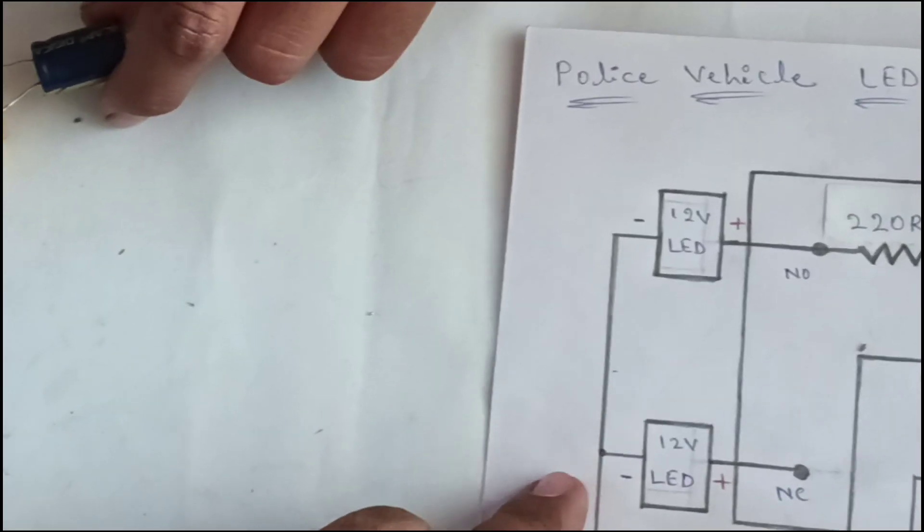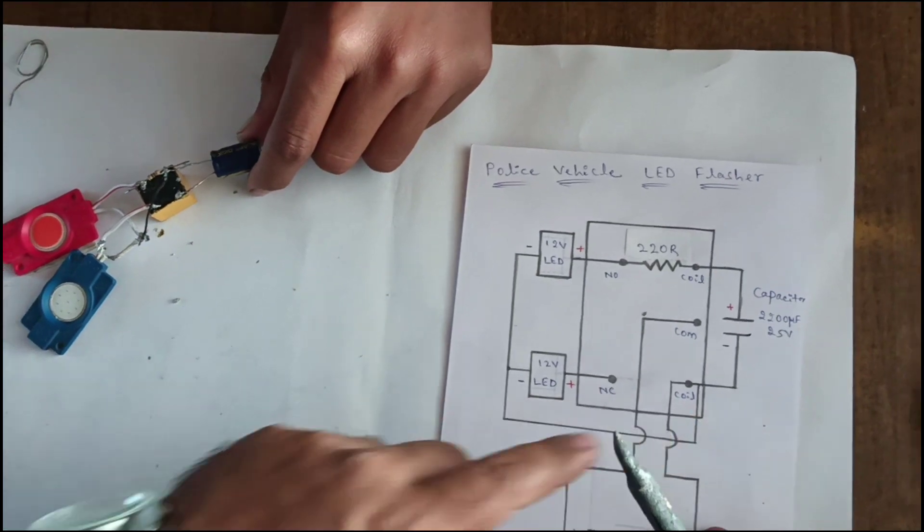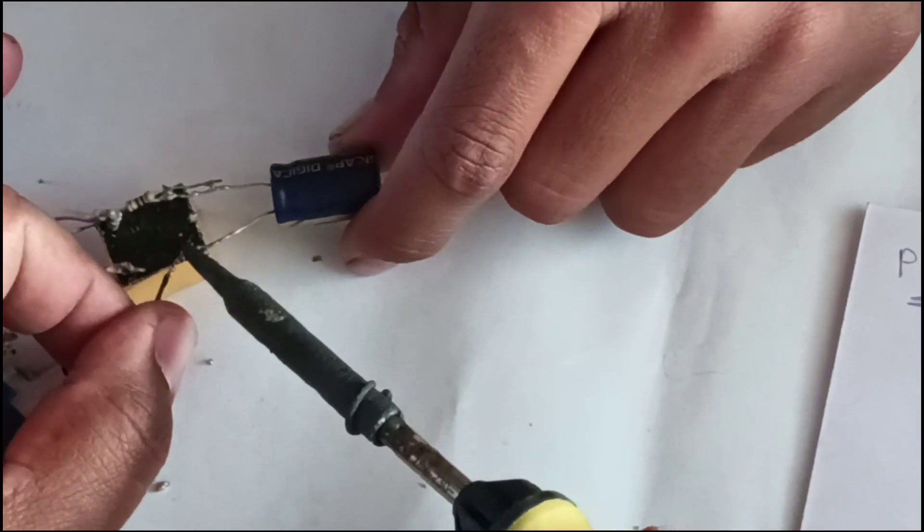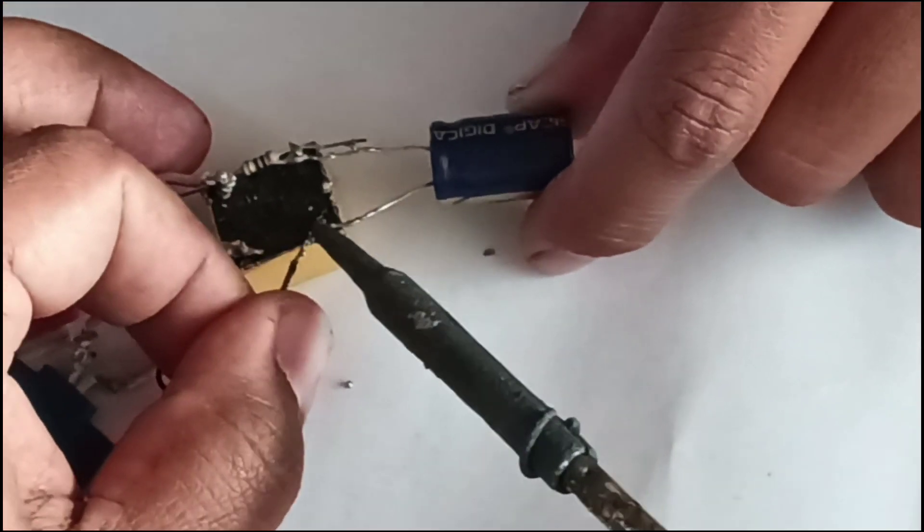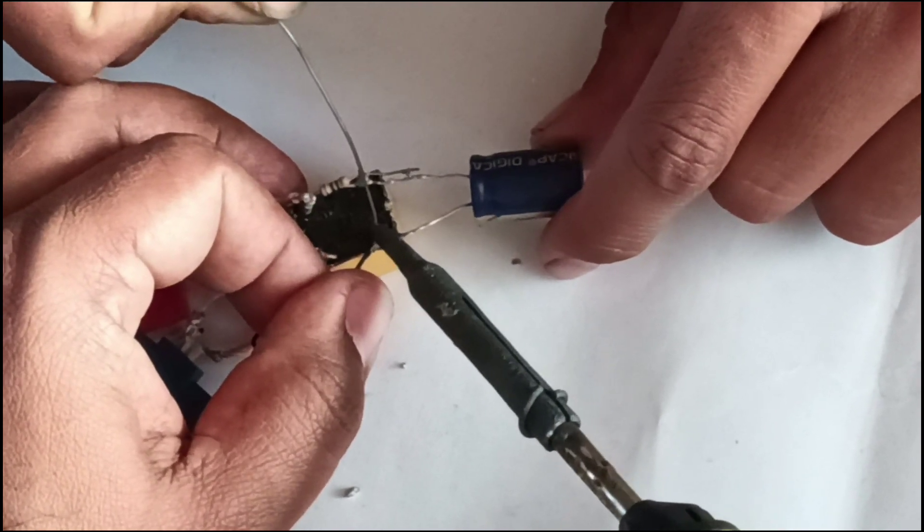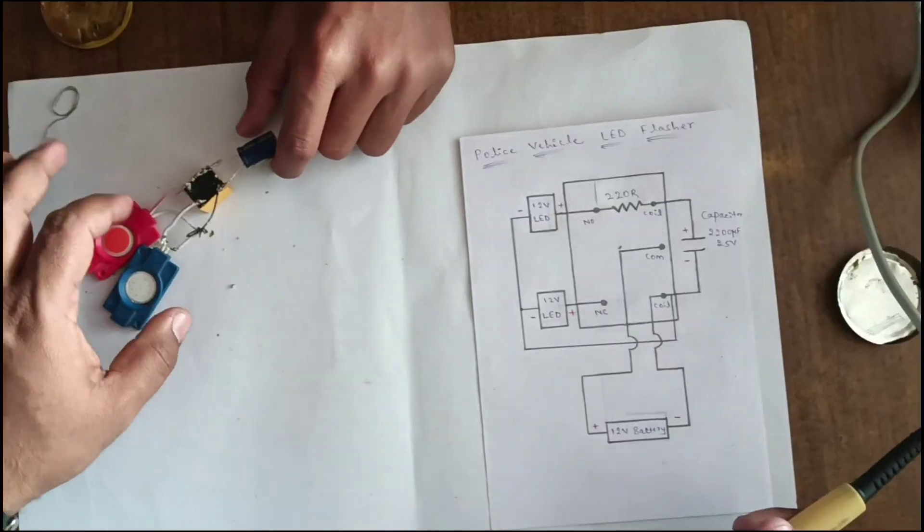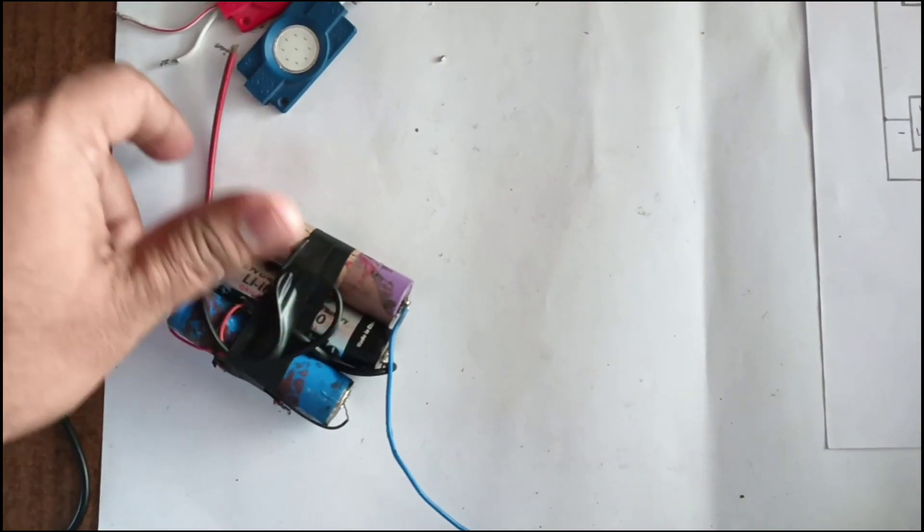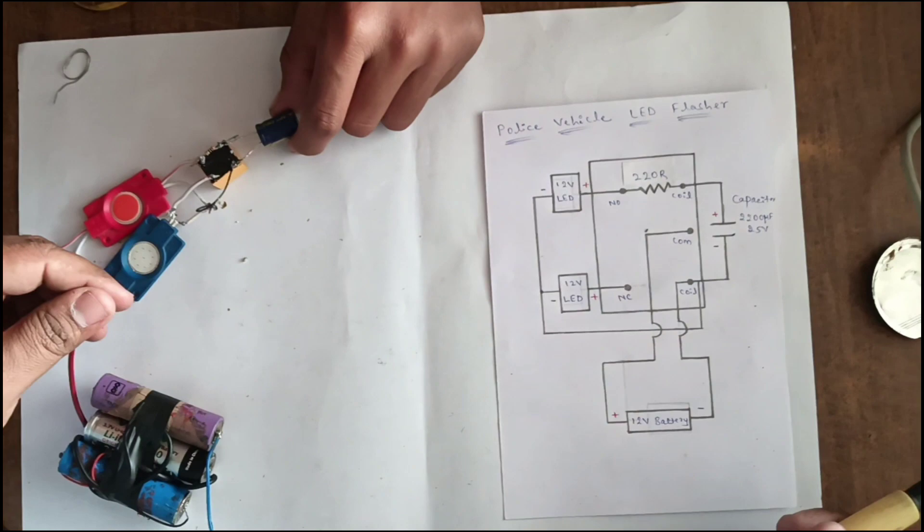Negative are connected to coil of the 12V relay. This is the second coil of the 12V relay. Now the circuit is completed. Give the 12V supply to this relay circuit.